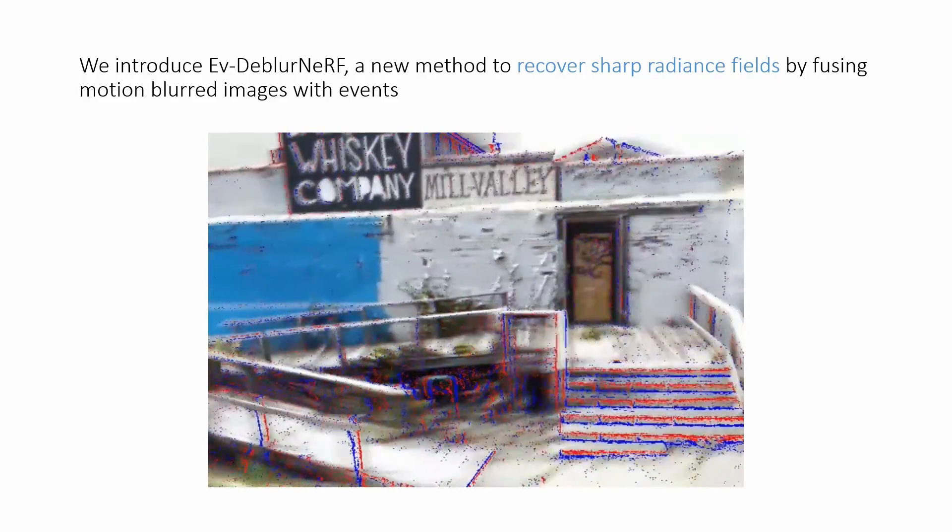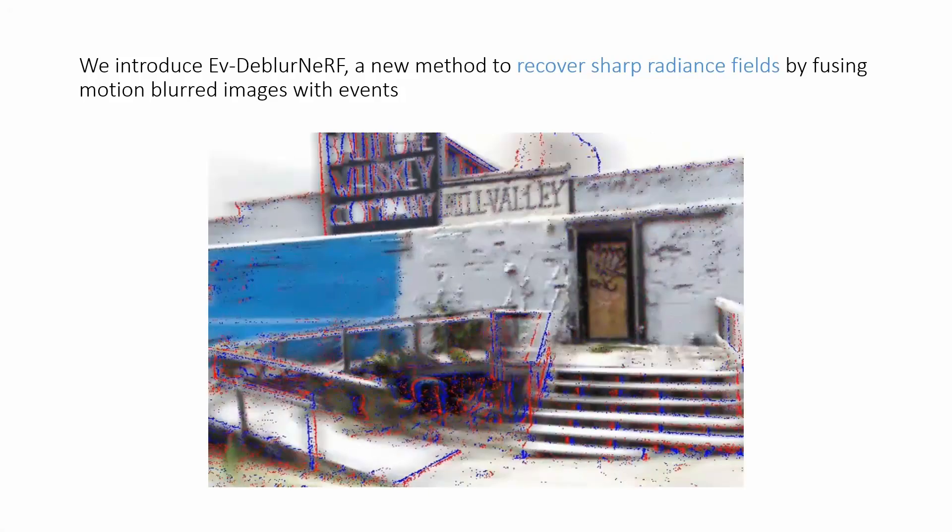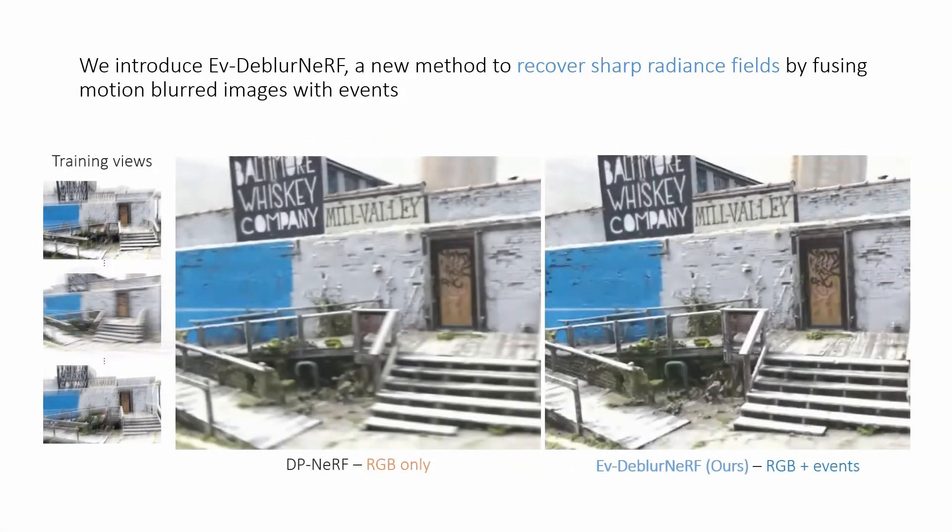We introduce EVDeBlurNERF, a new method that exploits event-based cameras to recover sharp radiance fields from motion-blurred images.